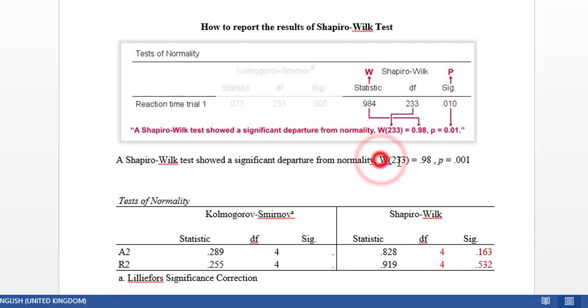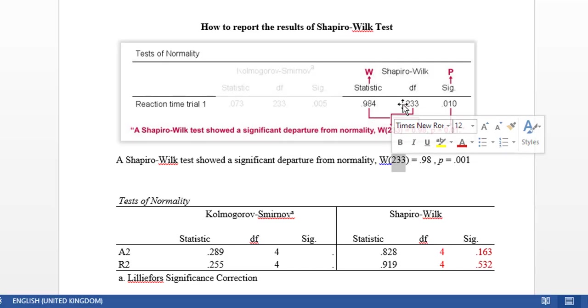So I put W which means Wilk, and I put here degrees of freedom, the number of the sample. Then I put the equal sign, and here again I put the statistic. So you can see just two decimal places.